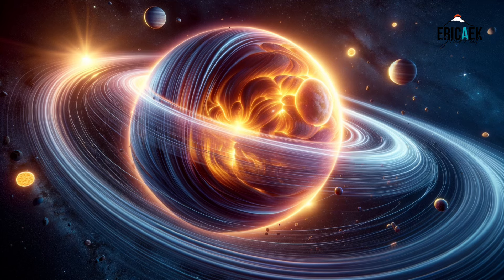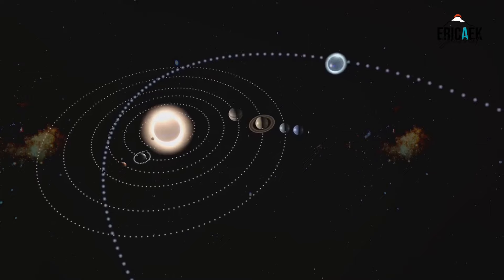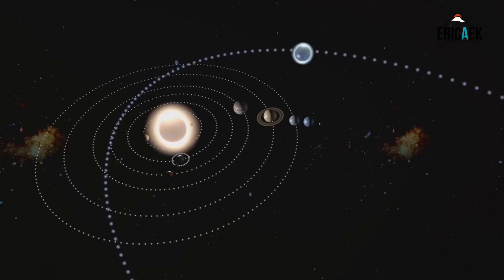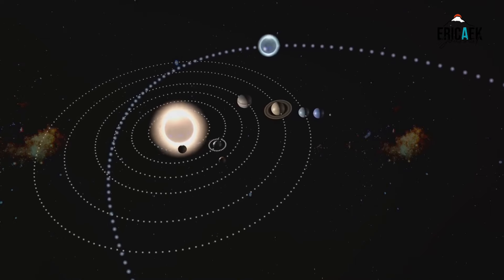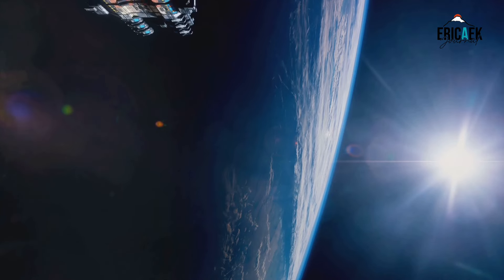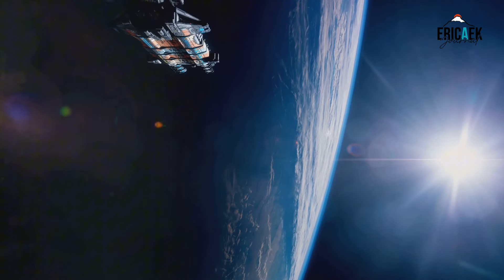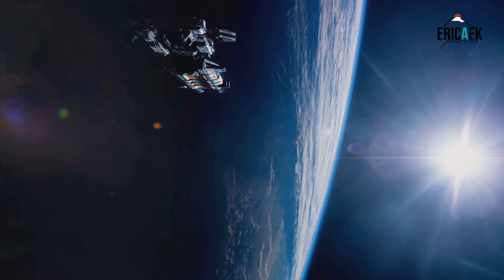It's not that the Earth is pulling objects towards it in a straight line, but rather, objects are following the curved path in space-time that Earth's mass has created. This explains why planets orbit stars and why the Moon orbits Earth. They're all just following the dips and curves in space-time created by more massive objects.